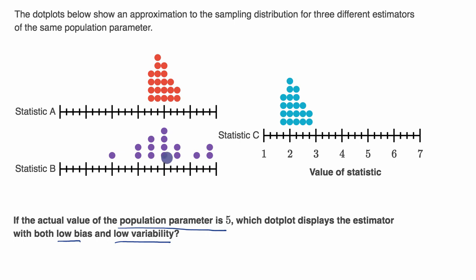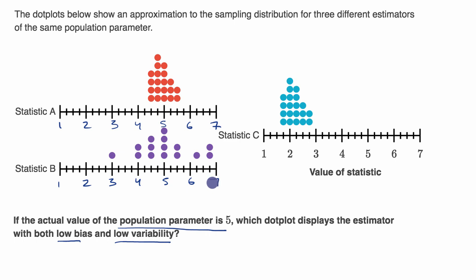Let's mark five on each of these approximations of the sampling distributions. Looking at our scale — one, two, three, four, five, six, seven — our population parameter is five. That is right over there on each of the three dot plots.